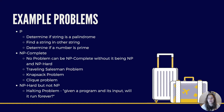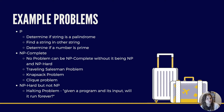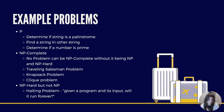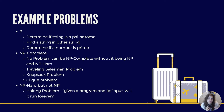Now let's look at some example NP complete problems. Remember, no problem can be NP complete without it being both NP and NP hard. There are some very famous problems within NP complete. We have the traveling salesman problem, which states: given a list of cities and distances between each pair of cities, what's the shortest possible route that visits every city exactly once and returns to the original city? You have to analyze all possible routes, and there's no real polynomial time solution. But if you look at just a solution and check if it's correct, it's fast — solvable in polynomial time.